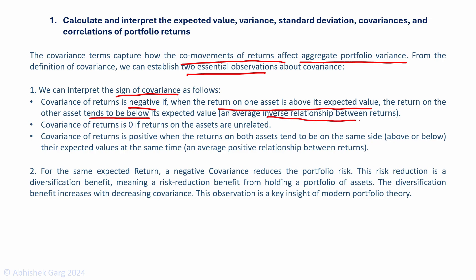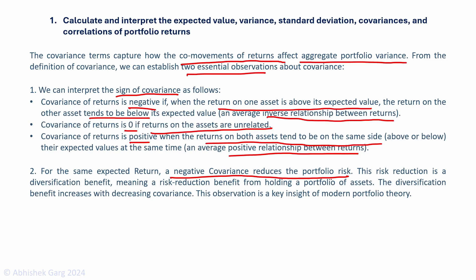A covariance of zero means the returns on the assets are unrelated. The covariance of returns is positive when returns on both assets tend to be on the same side — above or below their expected values at the same time — depicting a positive relationship. For the same expected return, a negative covariance reduces portfolio risk. This risk reduction is a diversification benefit. As covariance decreases, overall portfolio risk reduces, giving greater diversification benefit.